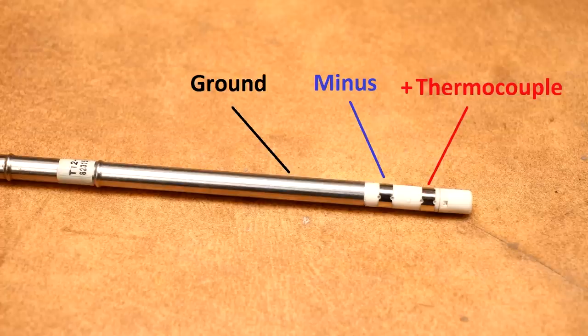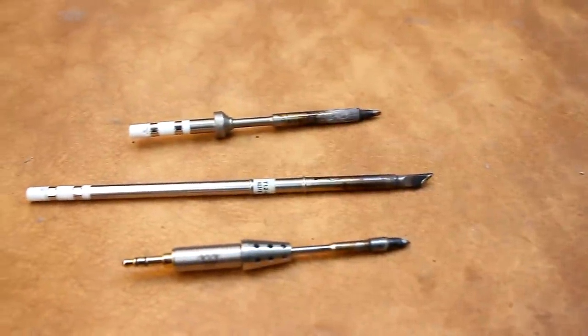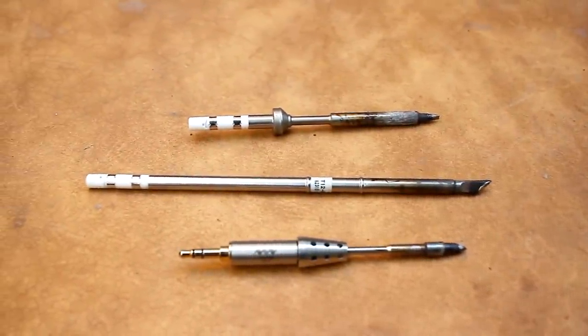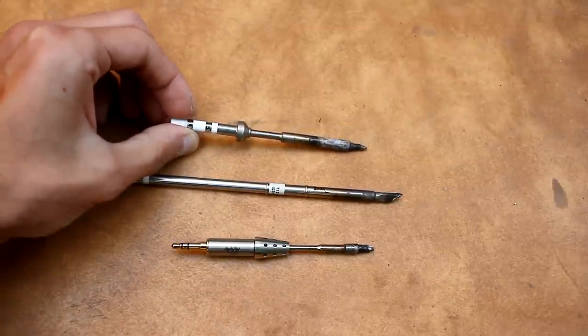Also there is ground, which I didn't use, but it is desirable to ground the housing. Tips of the TS100 and TS80 soldering irons made in the same way. A thermocouple is in series with a heater.